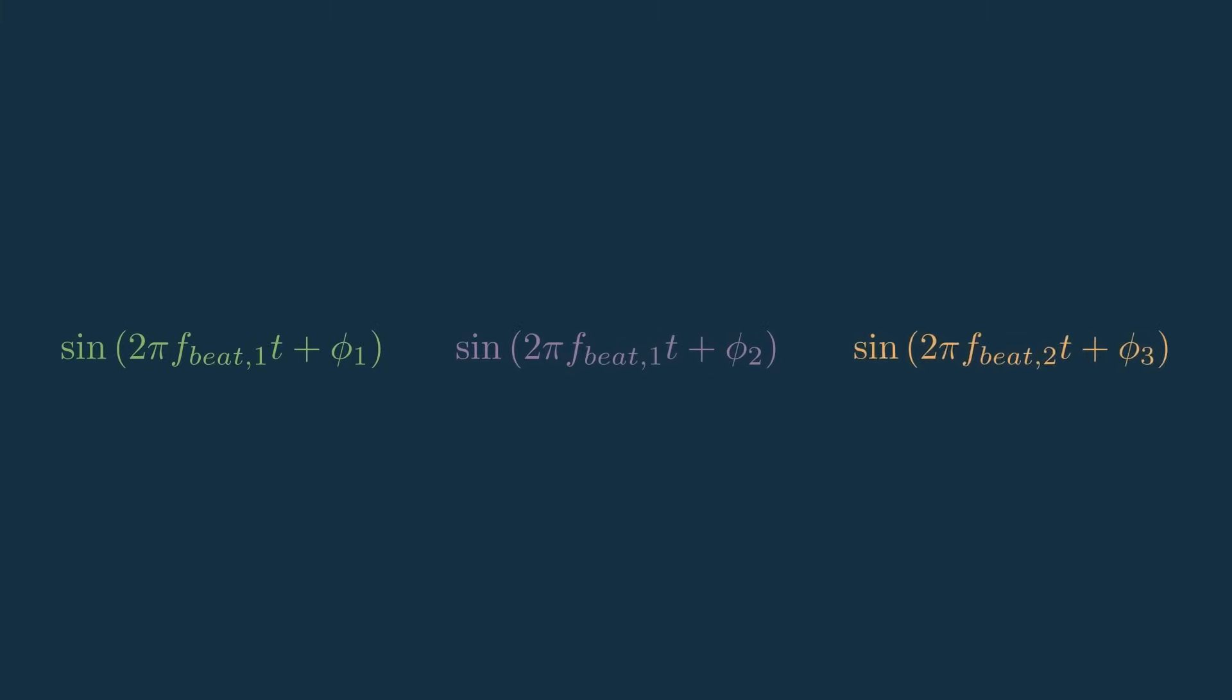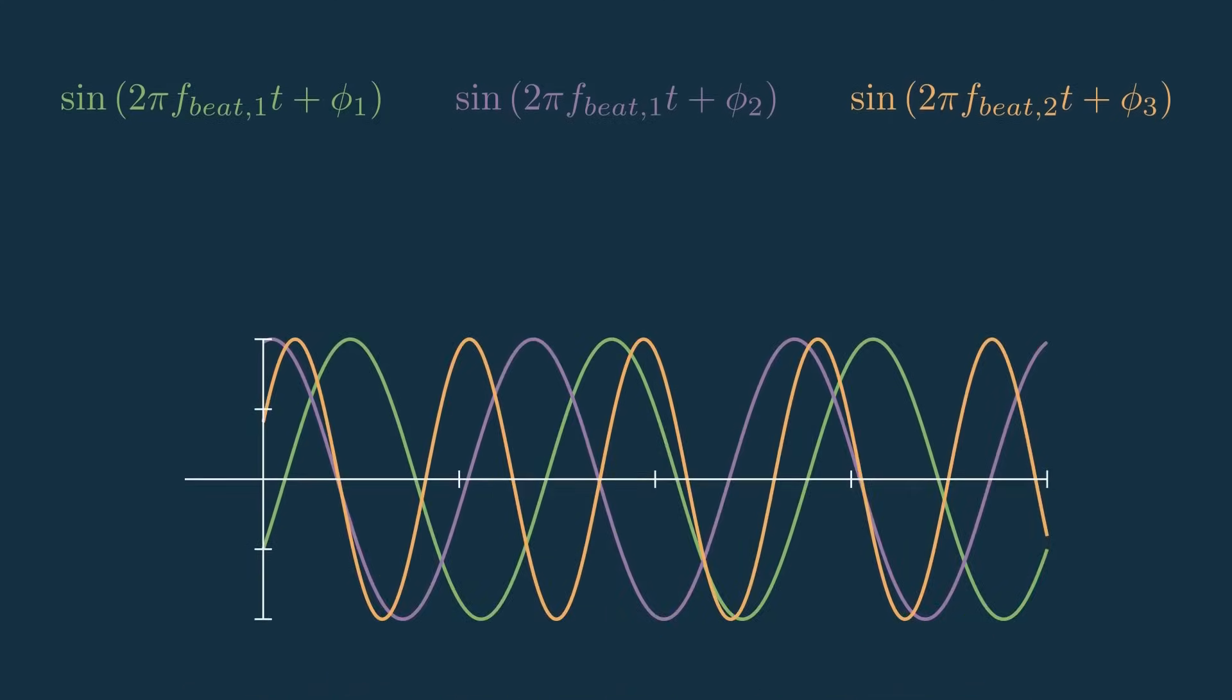So from the same chirp, let's assume we have 3 targets in the scene, and 2 of them are at the same range with different velocities, and the other is at a different range. So that means we get 3 sinusoids with 2 unique peak frequencies and 3 unique relative phases.